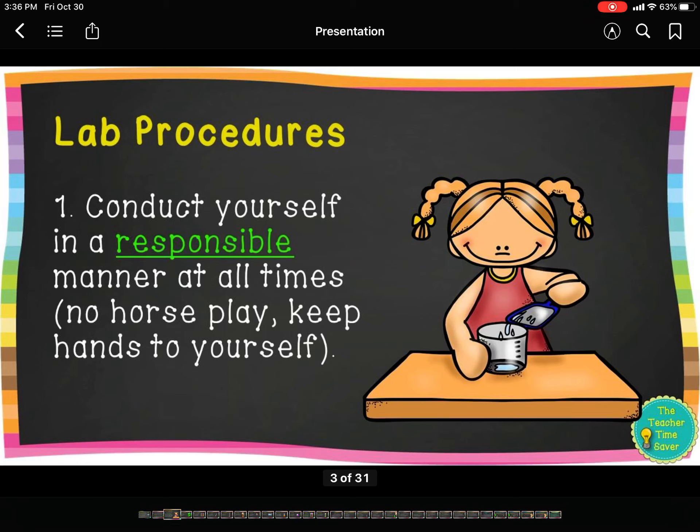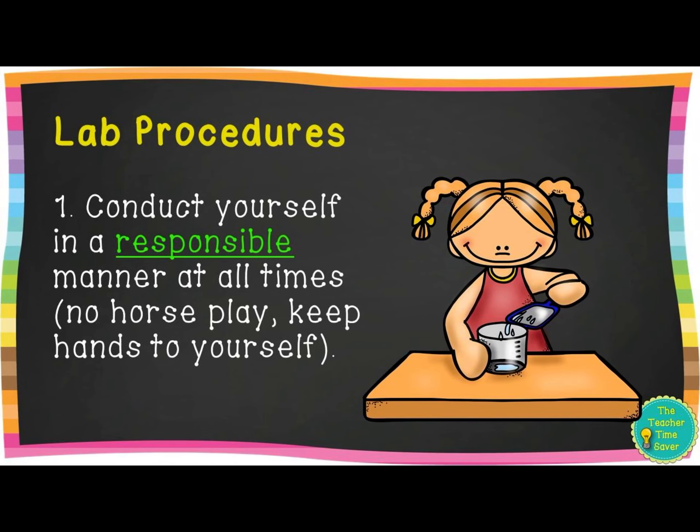The first rule is to conduct yourself in a responsible manner at all times — no horseplay, keep your hands to yourself. You really have to be responsible. The lab we're going to be doing doesn't have that much dangerous stuff, but some labs can be really dangerous. Ask me sometime and I'll tell you about the time I burned my elbow with acid in a chemistry lab in college. So you have to be responsible — no horseplay, keep your hands to yourself.